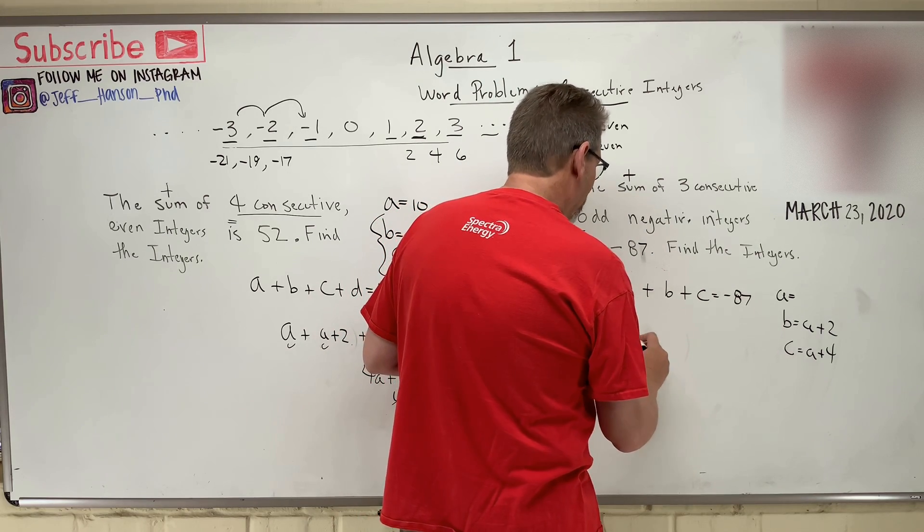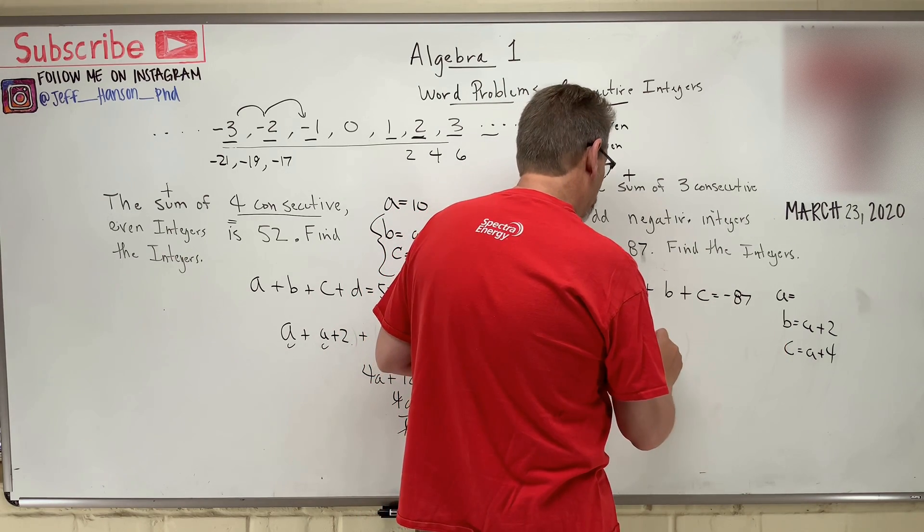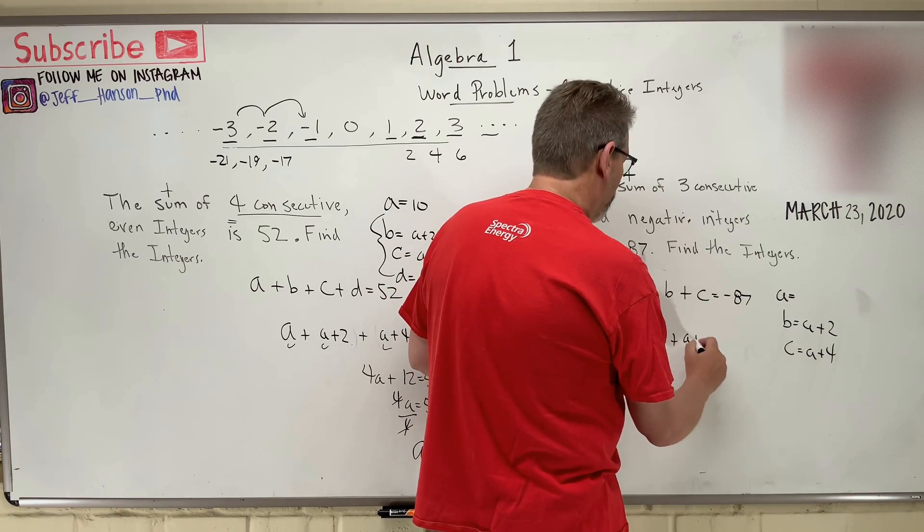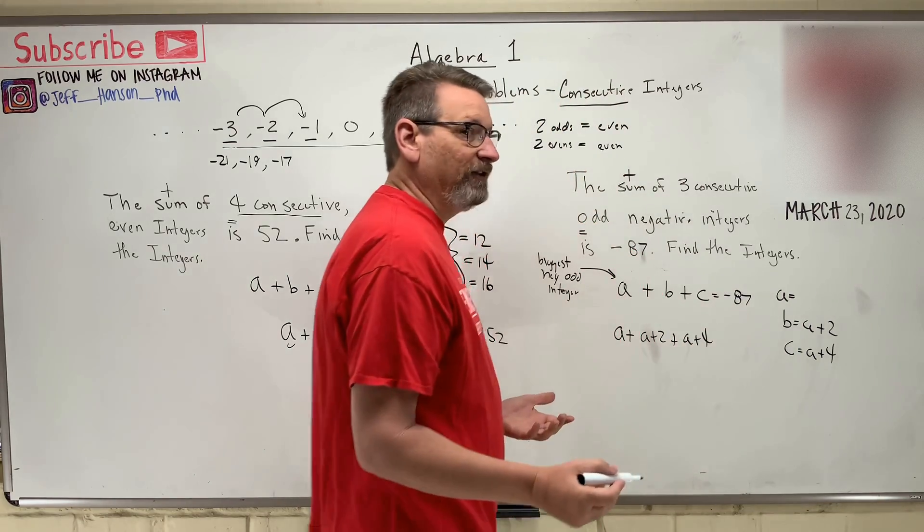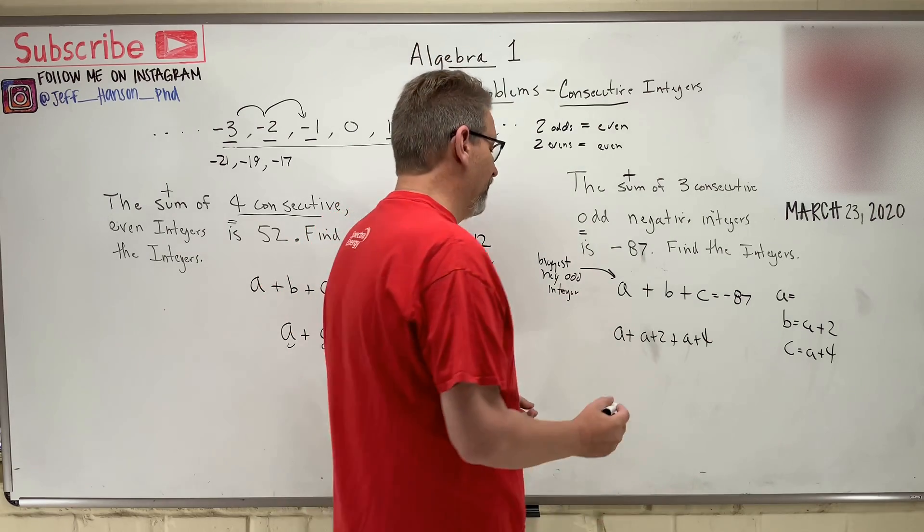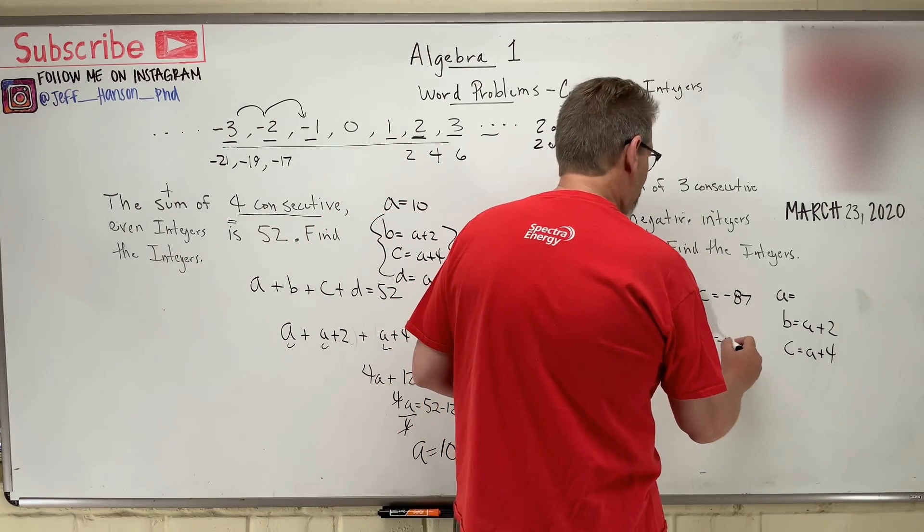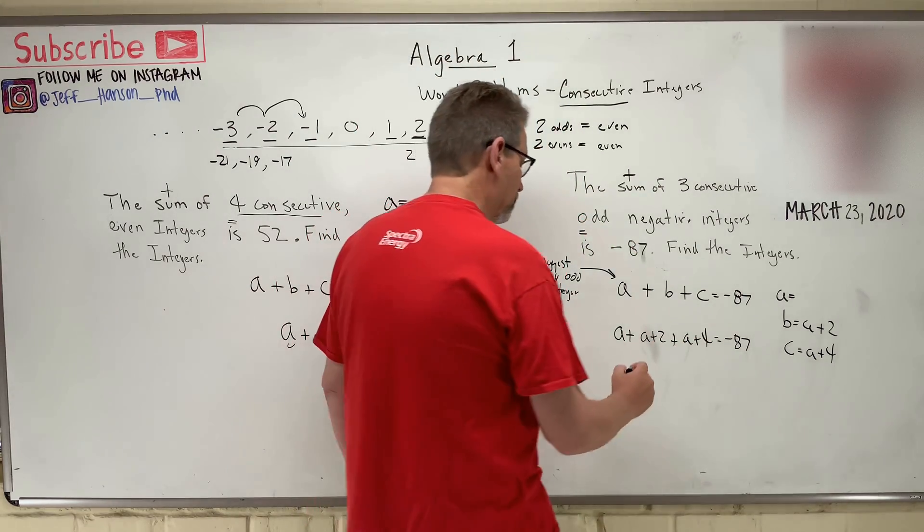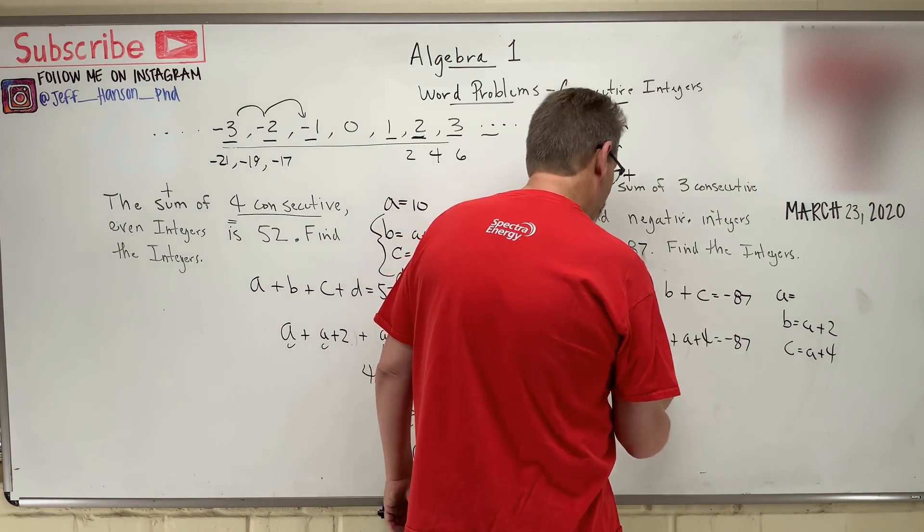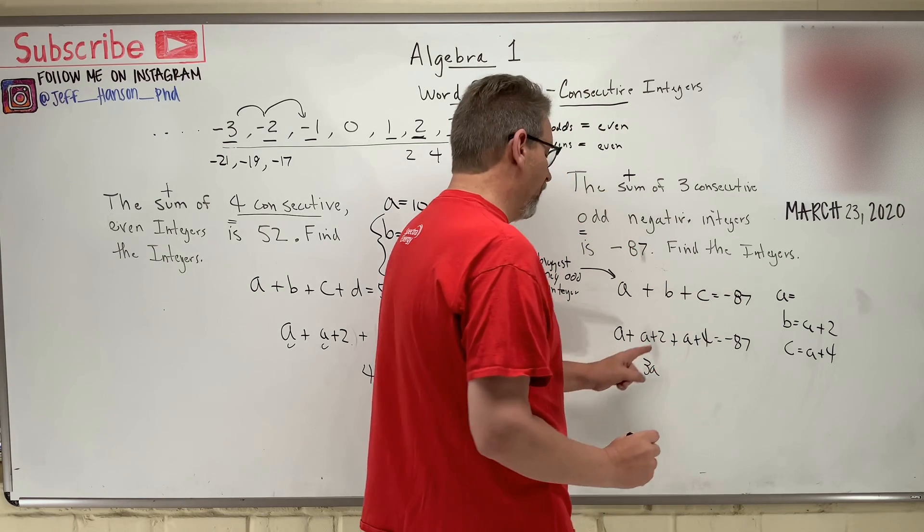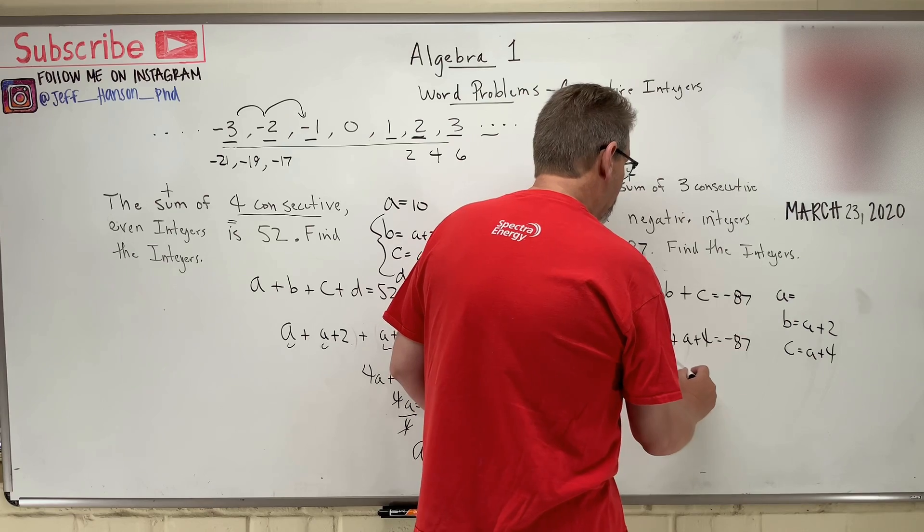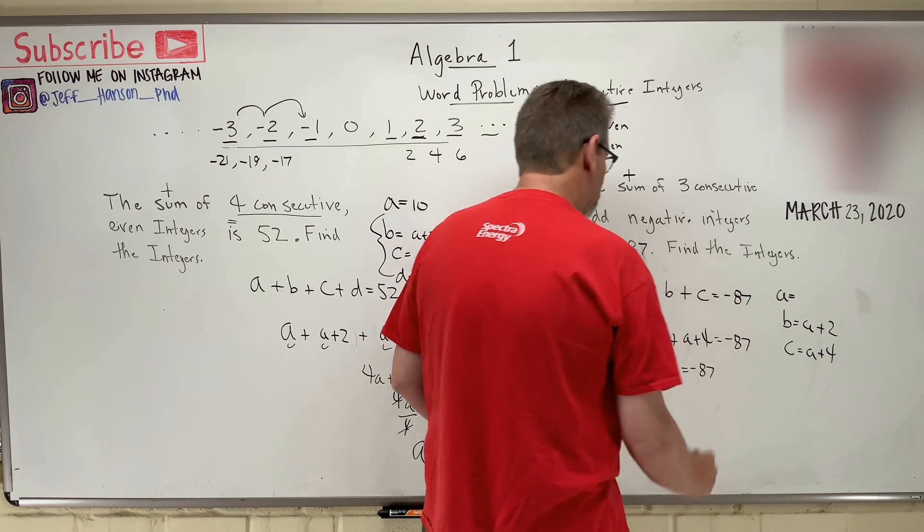So A plus A plus two plus C is A plus four, and again, I don't need any parentheses because I have a positive there for my distributive property, equals negative 87, okay? Just like we did before, let's do a little grouping, okay? A and A and A is three A's, and then our numbers, we got two plus four is six, equals negative 87, okay?